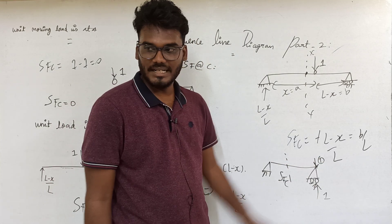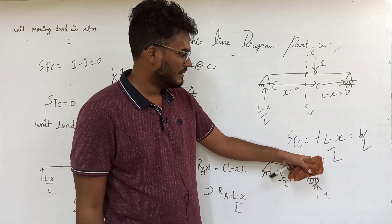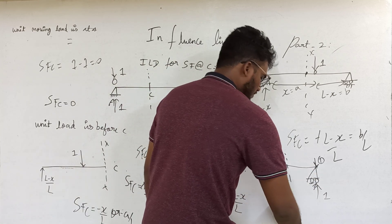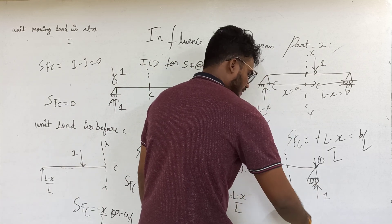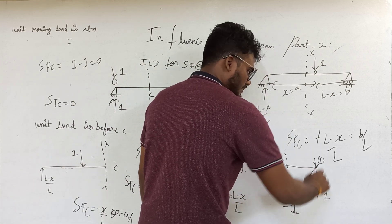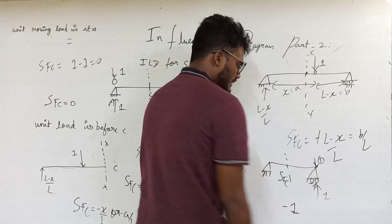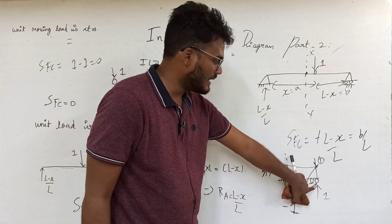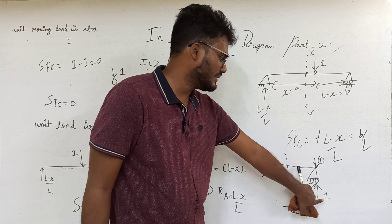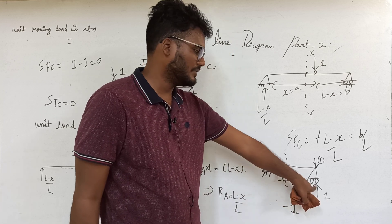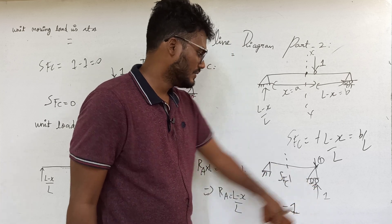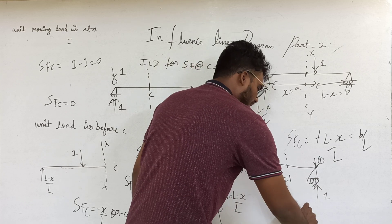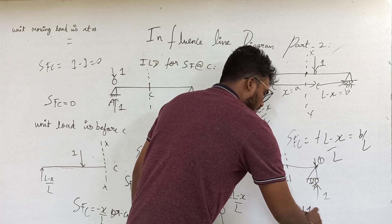When the unit load is on support B, right side upward is negative. The reaction acts upward from the right, giving minus 1, and the unit load acts downward, so right side downward is positive: plus 1. Therefore minus 1 plus 1 equals 0, so shear force at C is 0.